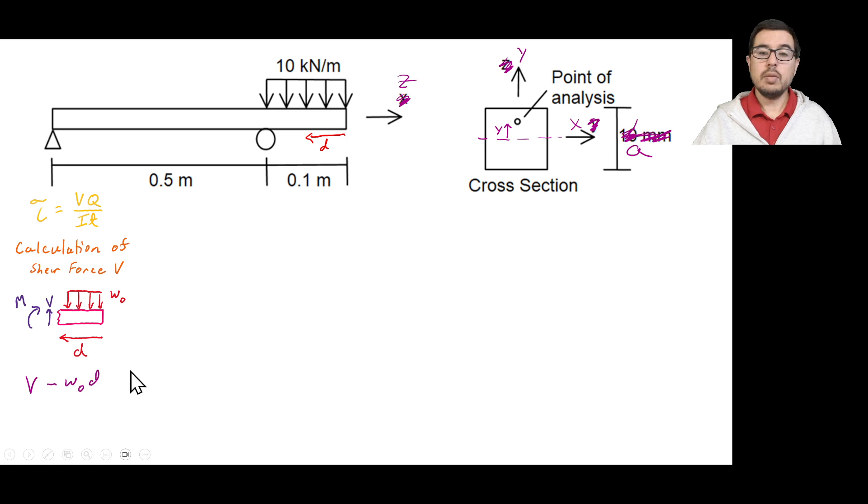And to do that, we can perform equilibrium and know that this shear force minus w naught times the length, over which it's acting as d, to get that equal to zero. And so v is going to be equal to w dot d. And notice also that this quantity v is going to be dependent on d.